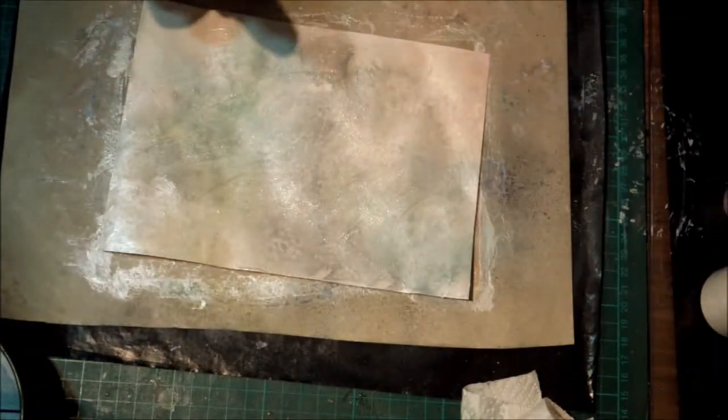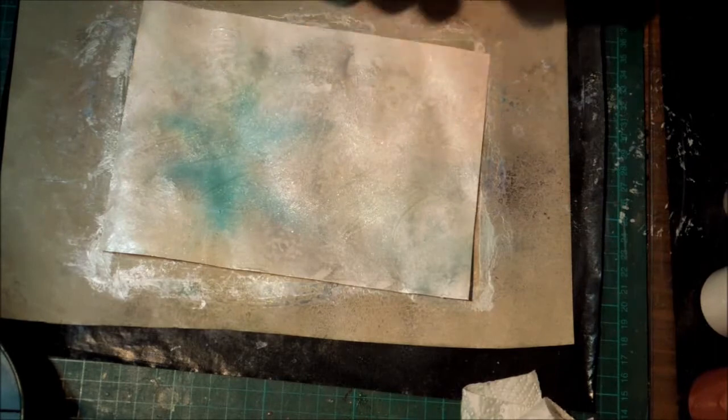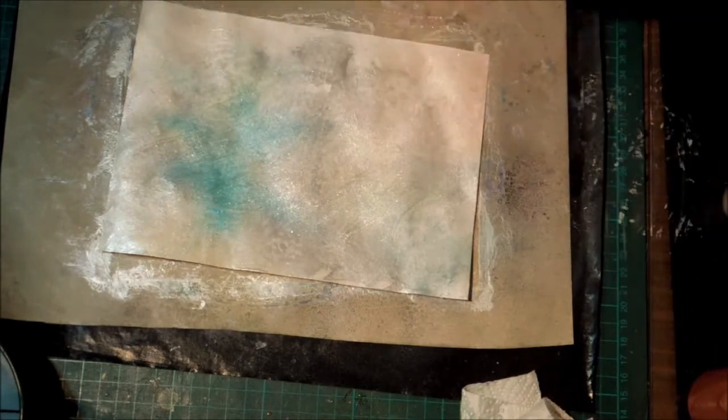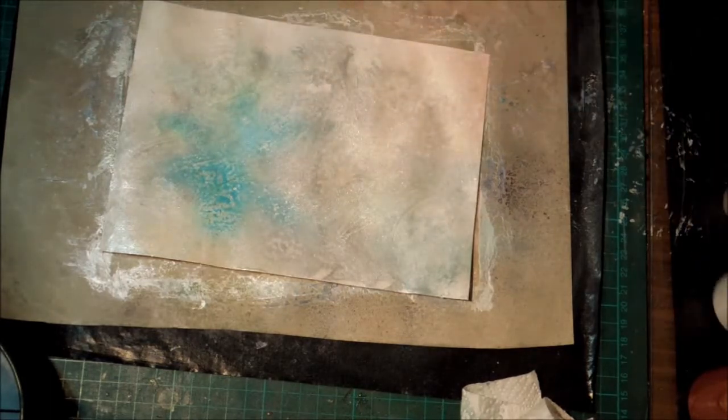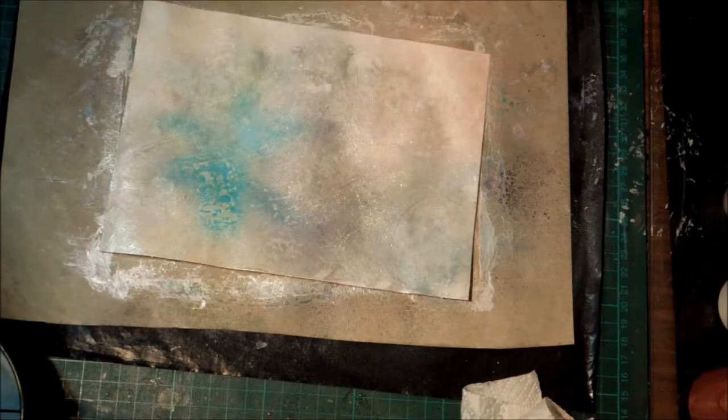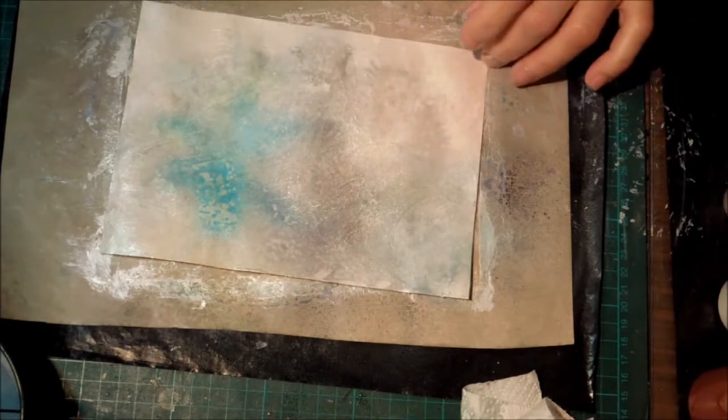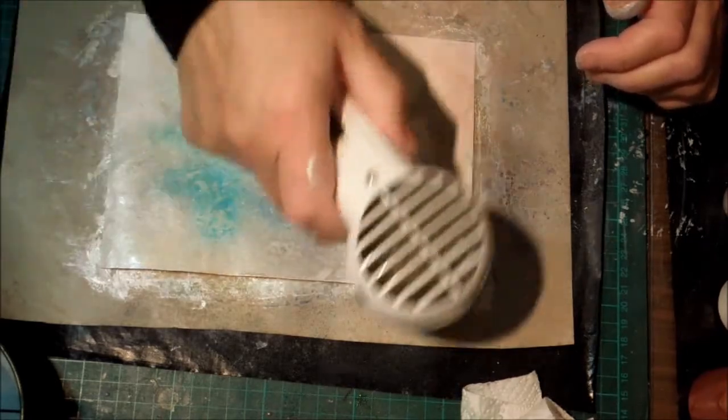So then I'm going to put a little bit more color on, and more of the white, maybe even a little bit more black. The black I think just helps make it look like there's veins in it a bit more. And dry it again.